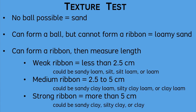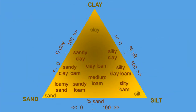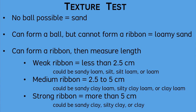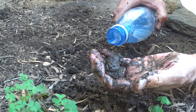Next, if the ball cannot be shaped into a ribbon, then the material can be categorized as loamy sand. It consists mostly of sand with a lesser amount of the smaller particles of silt or clay. If the ball does form into a ribbon, then the material could consist of a wide range of mostly smaller sized particles. A shorter or weaker ribbon indicates larger grains, while a longer or stronger ribbon indicates smaller grains.